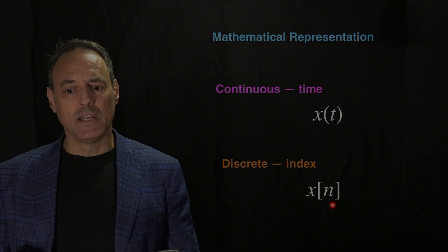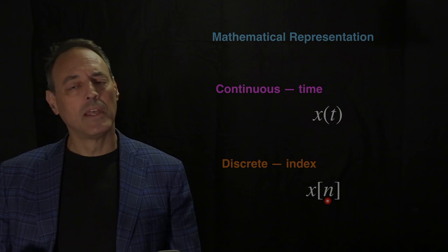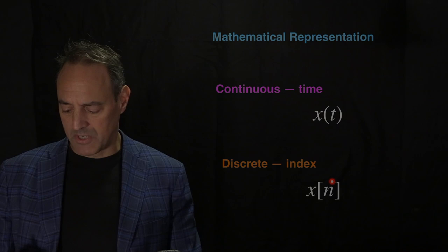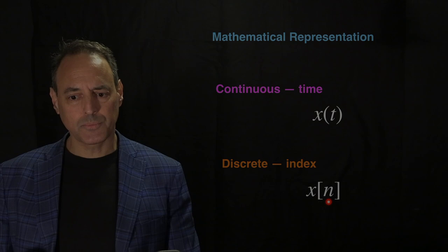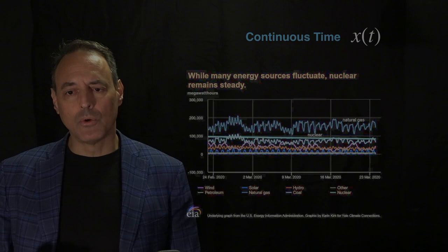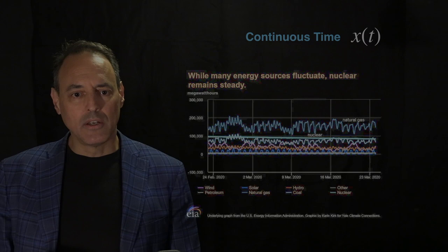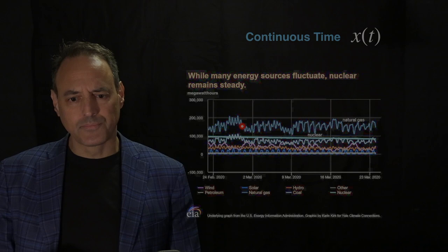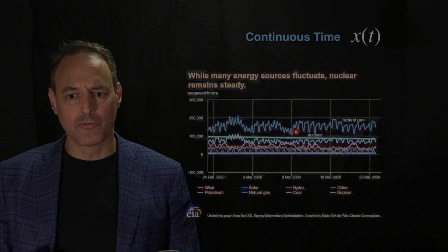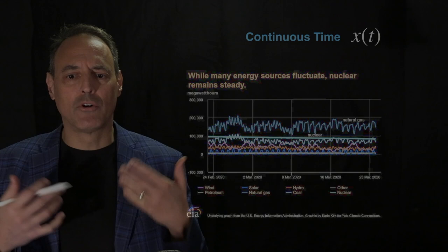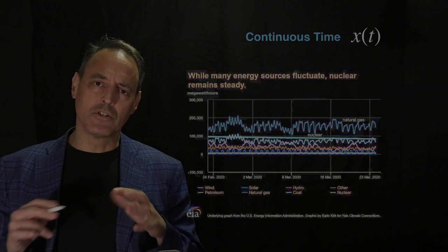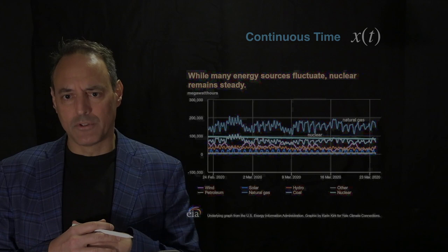Discrete time doesn't even have to be time specifically — it's just a discrete signal where n is a way of parametrizing it, going from n equals one, two, three. You have a discrete set of events that you're measuring. As an example of a continuous time signal, here is energy expenditure over some period of time in 2020 — the consumption of power from various sources like natural gas, nuclear, electric, and solar over time. At any time, power is being consumed and you can see consumption rates over daily fluctuations over a period of time.